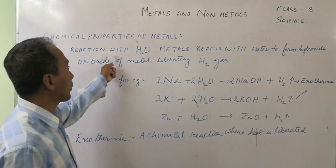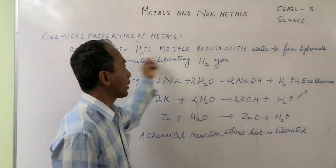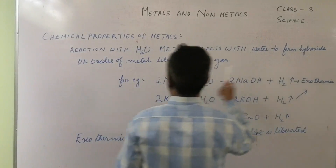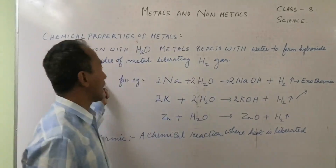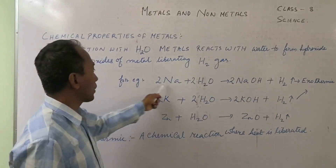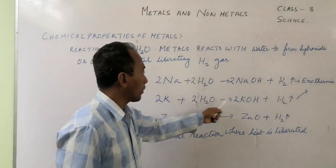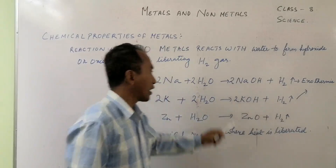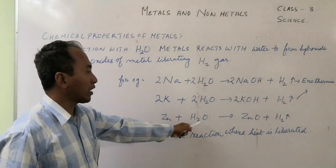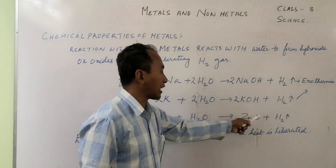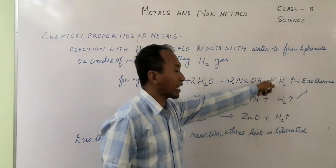The third chemical property of metals is reaction with water. Metal reacts with water to form hydroxide or oxides of metal, liberating hydrogen gas. For example, sodium reacts with water to form sodium hydroxide and hydrogen gas. Potassium reacts with water to form potassium hydroxide and hydrogen gas. Zinc reacts with water to form zinc oxide — in this case it does not form a hydroxide but an oxide of metal — liberating hydrogen gas.